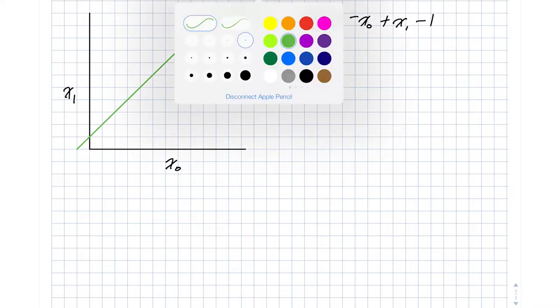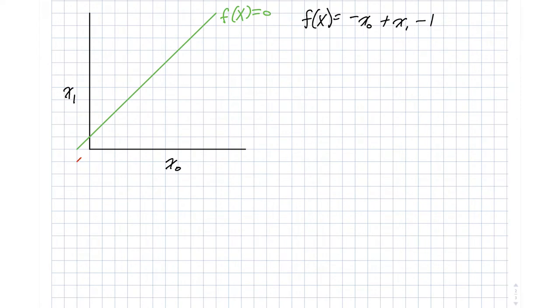Now imagine I draw in another line here, a red one, parallel to our green line. If we take one of those points like this point right here, x0 and x1 are the same, they're both 2, which means that f of x would actually be equal to negative 1 for that particular point. In fact, any of the points along this line, this is true, and you're welcome to go check that.